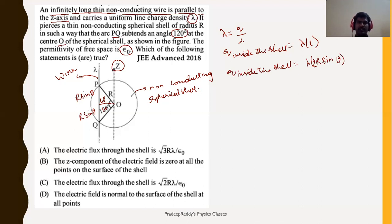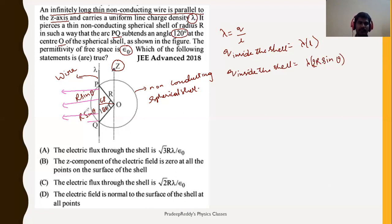Since there is no mention of a negative charge, we take the charge as positive. As it is a positive charge, the electric field extends outward in all directions. On the rod, the field extends outward, and on this side it will be inward, since a wire extends its field in the outward direction.